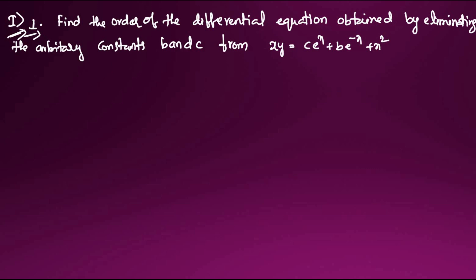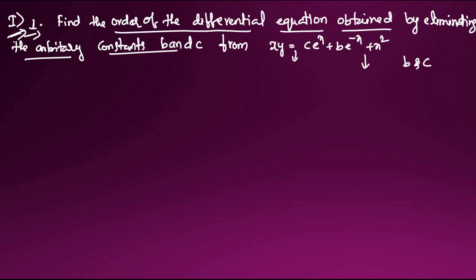Now starting Exercise 8A, Section 1, first question. The question says: find the order of the differential equation obtained by eliminating the arbitrary constants a, b, and c. The given equation is xy = ce^x + be^(-x) + x². We have to eliminate c and b and c from this equation, then state what the order is.